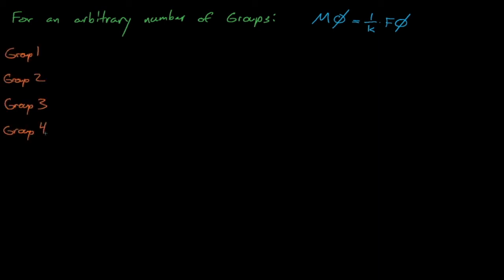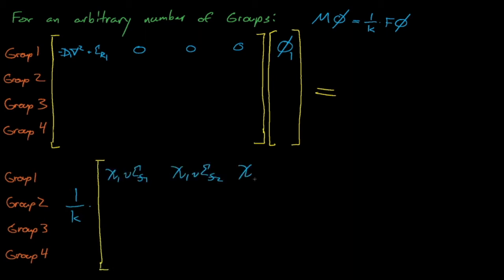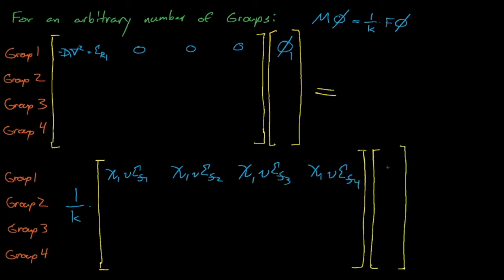In matrix form, we write our multigroup equations as a function of group for group 1, group 2, group 3, group 4, etc. On the left we write the coefficients attached to the multigroup fluxes in the neutron loss operator M, and on the bottom we have the coefficients for the multigroup fluxes in the fission operator F. For group 1, phi 1 will have a negative D grad-squared term plus a sigma-R term. We have no scattering source for group 1 because it's the fastest group and because we assume neutrons can't upscatter. In the fission operator, the group 1 fission source equals chi 1 times nu-sigma-fission for each of the other groups multiplied by each of the other fluxes — the rate at which all other groups create fission neutrons born into group 1.